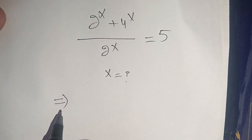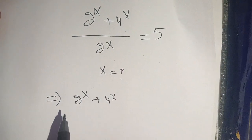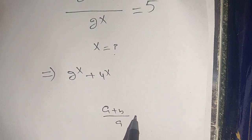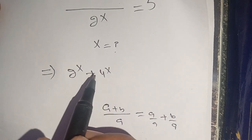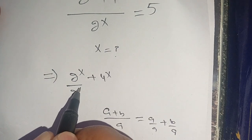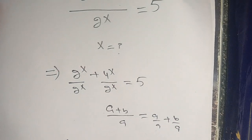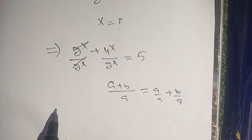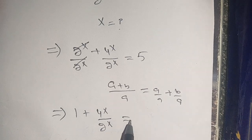We have 2 raised to power x plus 4 raised to power x divided by 2 raised to power x. We know that (a + b) divided by a can be written as a/a plus b/a. Using this identity, we can write the left hand side as 2^x / 2^x plus 4^x / 2^x, equal to 5. Now we cancel 2^x by 2^x, leaving 1 plus 4 raised to power x divided by 2 raised to power x, equal to 5.